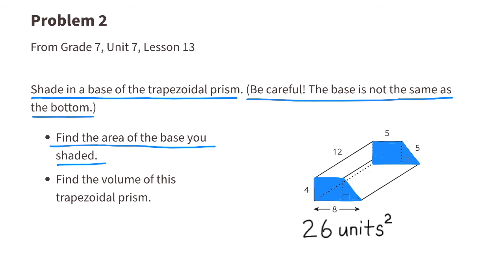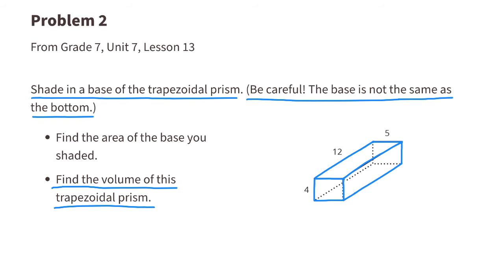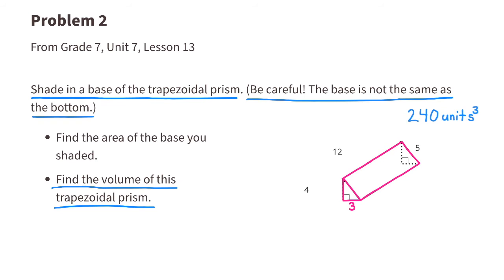Find the volume of this trapezoidal prism. I'll treat it as two prisms: a rectangular prism and a triangular prism. The dimensions for the rectangular prism are 4 by 12 by 5, so we multiply 4 times 12 times 5 — it has a volume of 240 cubic units. We need to add that to the volume of the triangular prism.